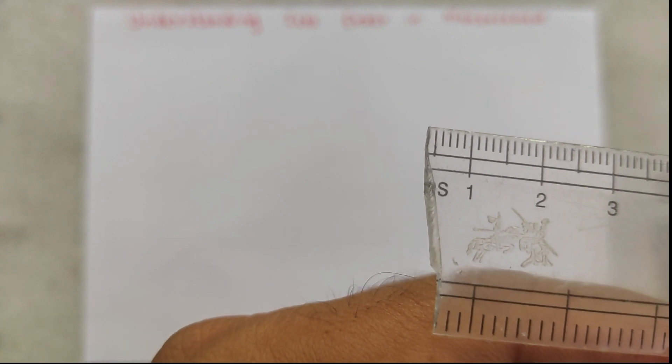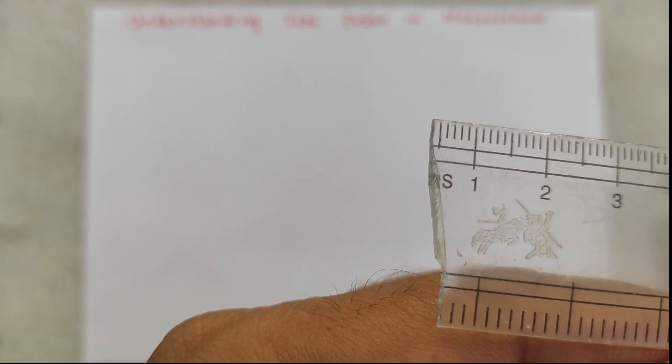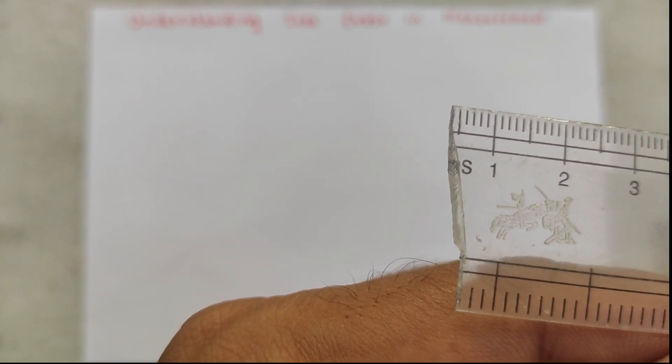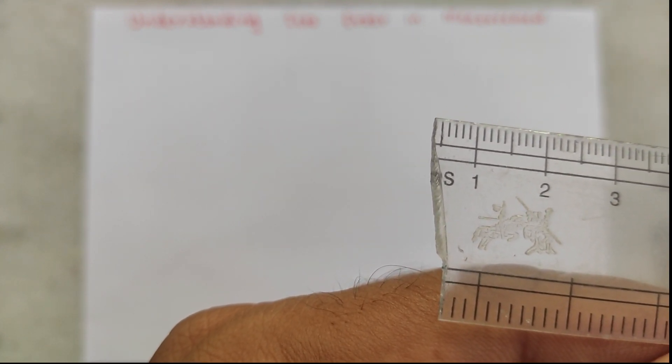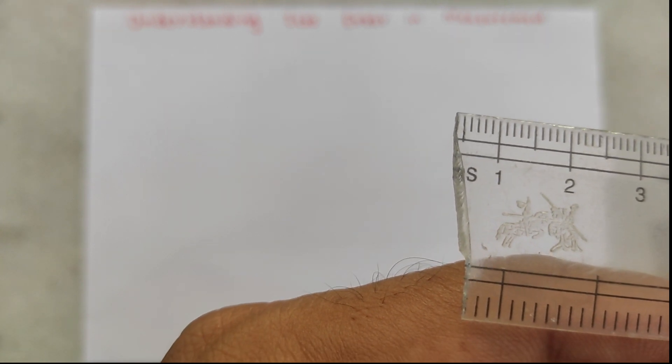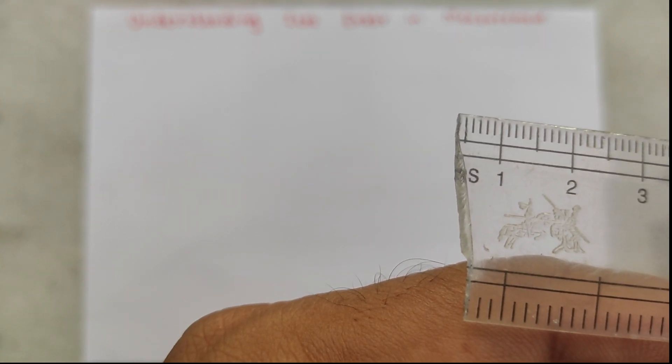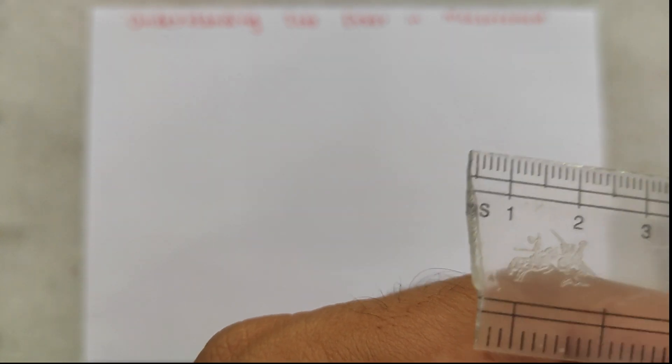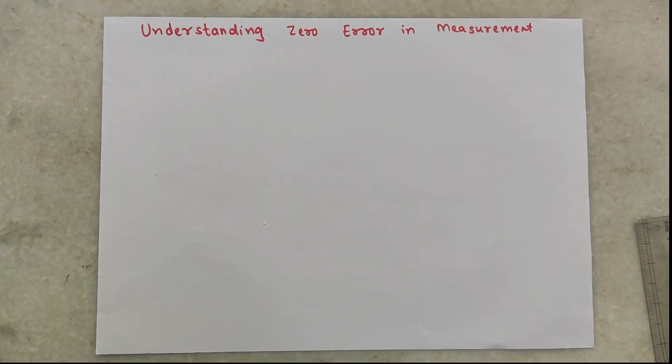Now, let us take a closer look at our broken scale. As you can see, there is a visible break of approximately 4 millimeters, and as there is no zero mark visible, there is a zero error. So we can conclude that there is an error of 4 millimeters in the scale.